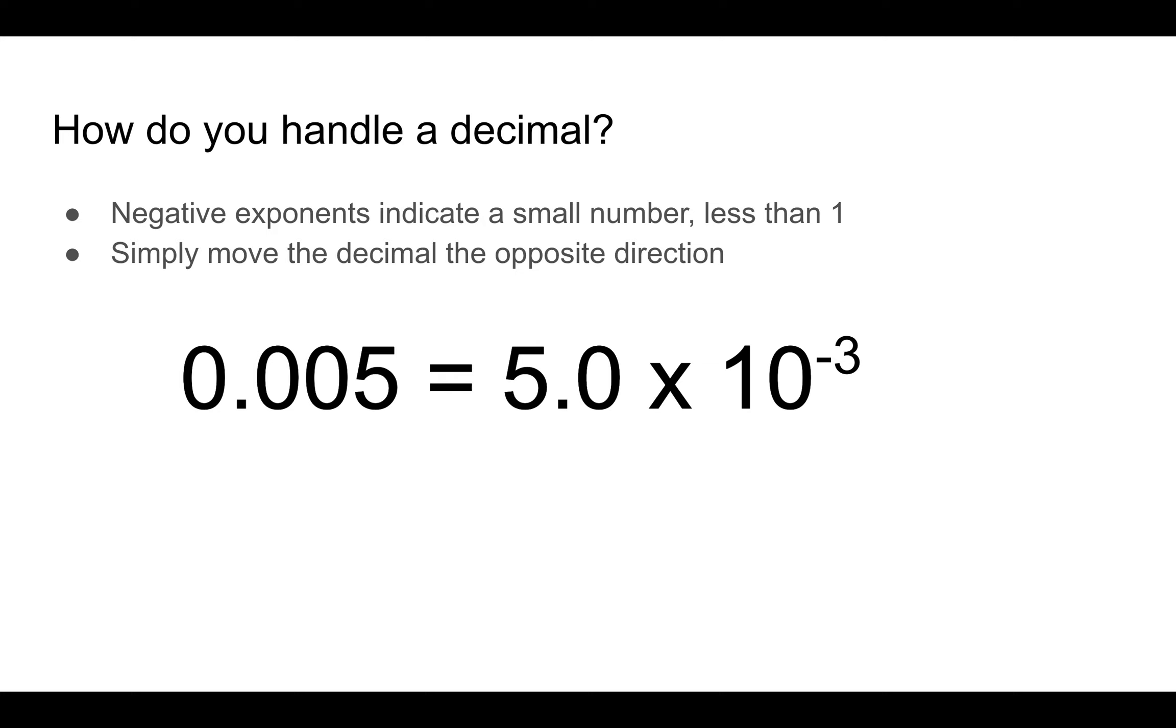Now, decimals are the very small numbers, less than 1. And the way you handle those, you have an exponent, a negative exponent.